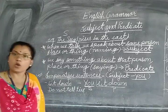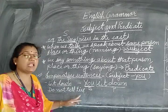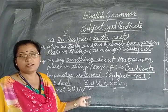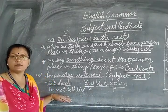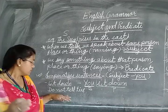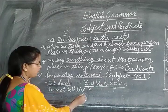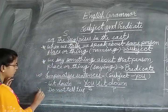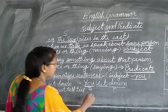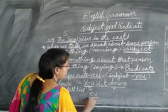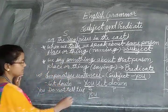Okay children. Second example: 'Do not tell lies.' Here we have not written the subject. The proper sentence will be: 'You do not tell lies.' So here 'you' is the subject and 'do not tell lies' is the predicate.